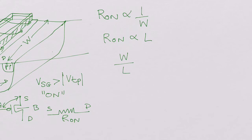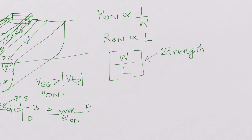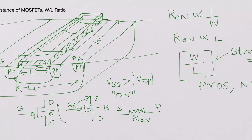From this, the W/L ratio for CMOS transistors is very important. It indicates the strength of the device — especially in digital libraries, it indicates the strength of the pMOS or nMOS transistor.